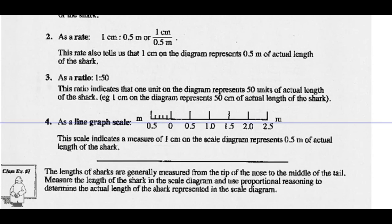You could give it as a ratio. Remember, a ratio must have the same units. So a ratio of 1 to 50 indicates that 1 unit on the diagram represents 50 units of actual length in real life — so 1 centimeter on the diagram represents 50 centimeters of the shark's actual length. Or you could have it as a line graph scale, which indicates that 1 centimeter on the scale diagram is half a meter of actual length — so 1 centimeter on the paper is the same as half a meter in real life.